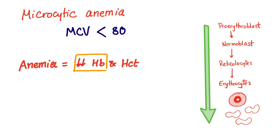Microcytic anemia is when the MCV — mean corpuscular volume — is less than 80. Watch my video on the erythrocyte indices. Anemia is decreased oxygen carrying capacity of the blood: decreased RBC mass, decreased hemoglobin, hematocrit, and RBC count.